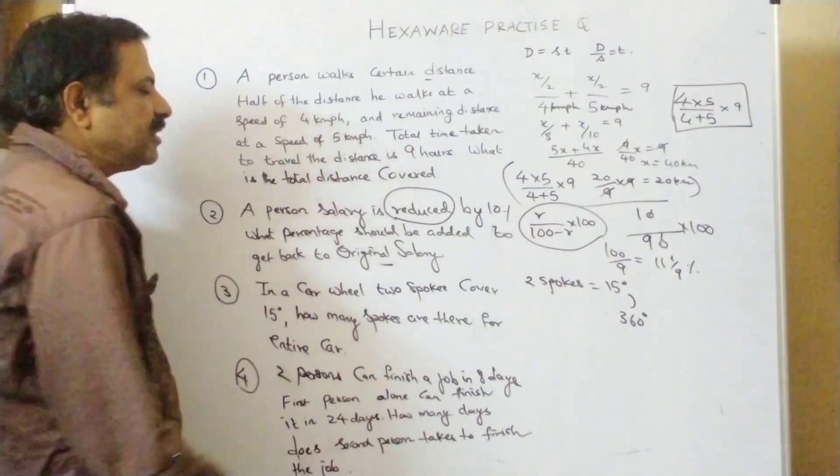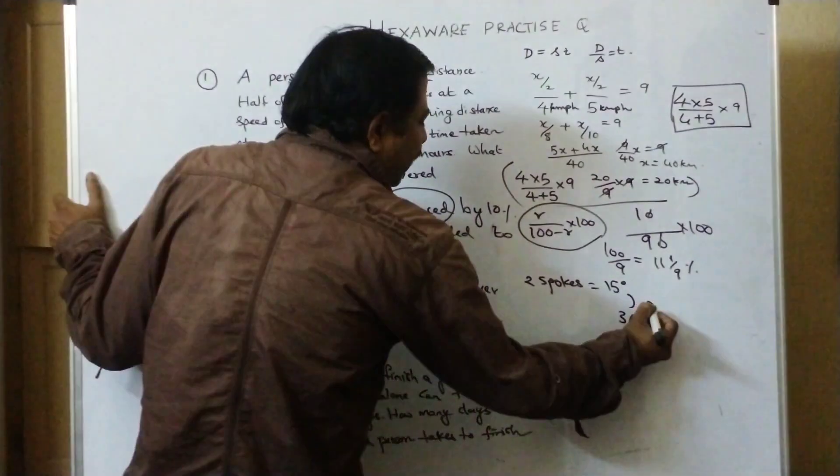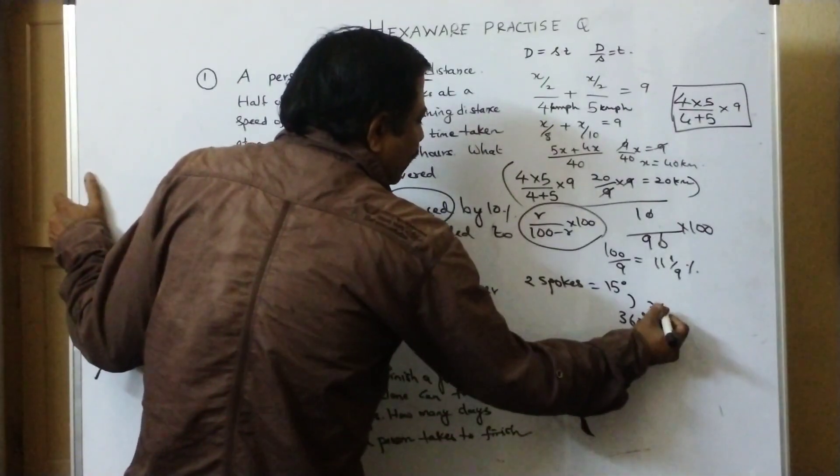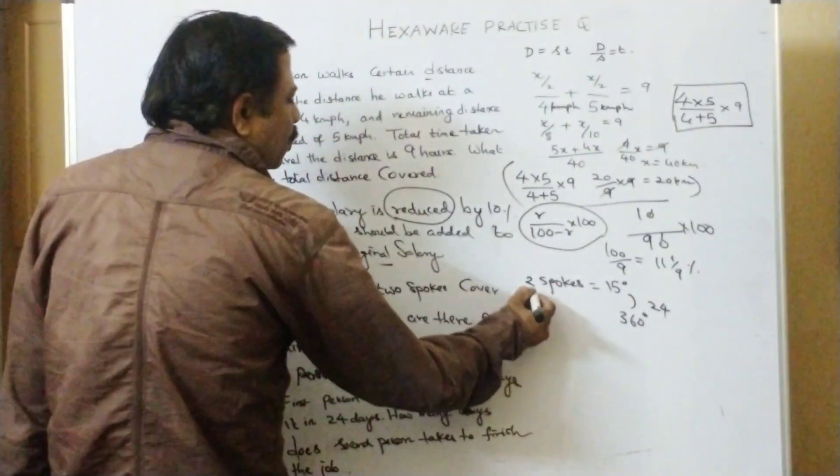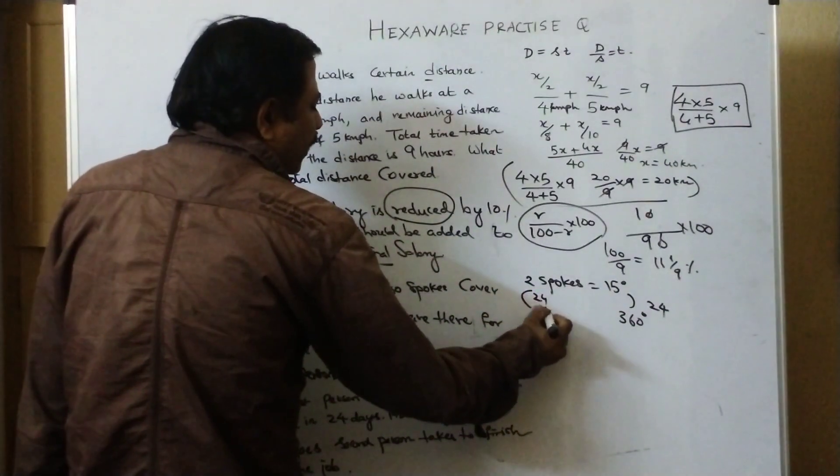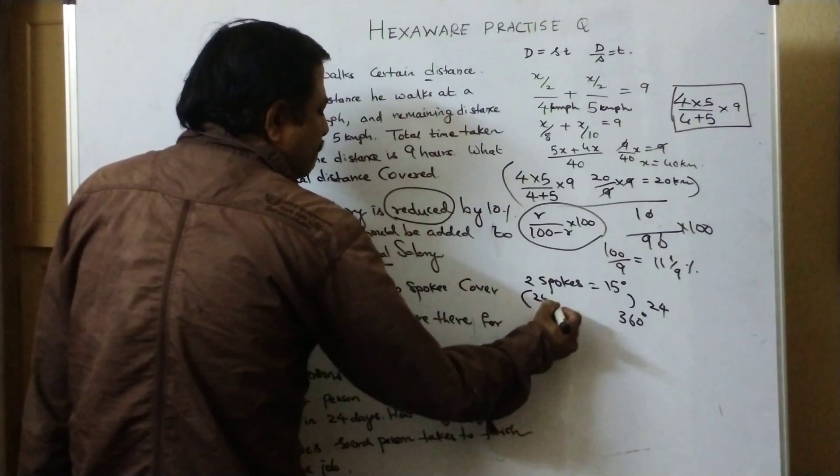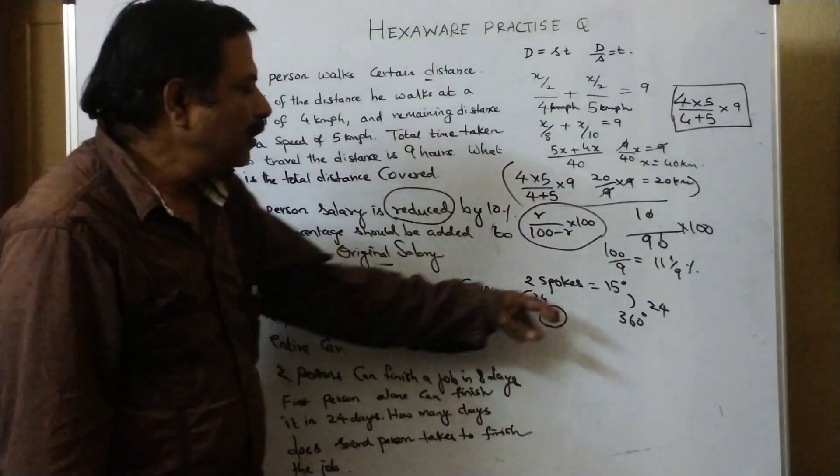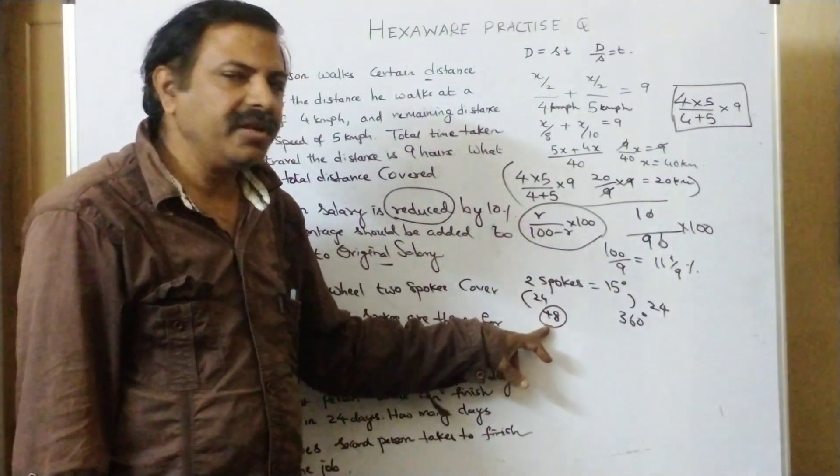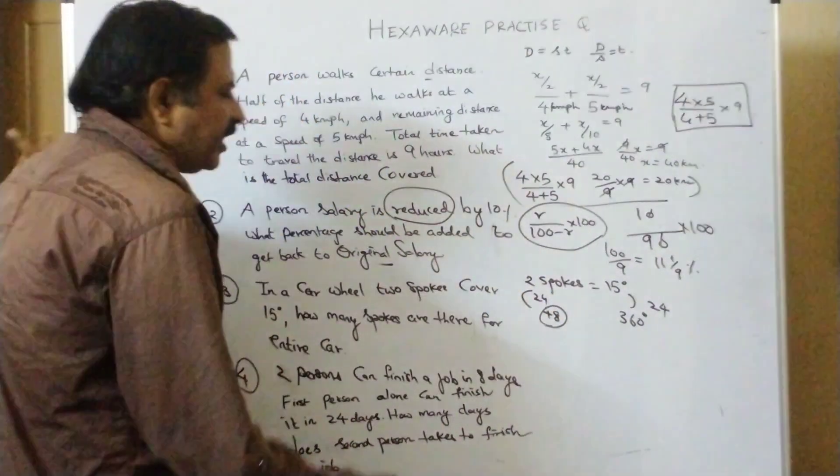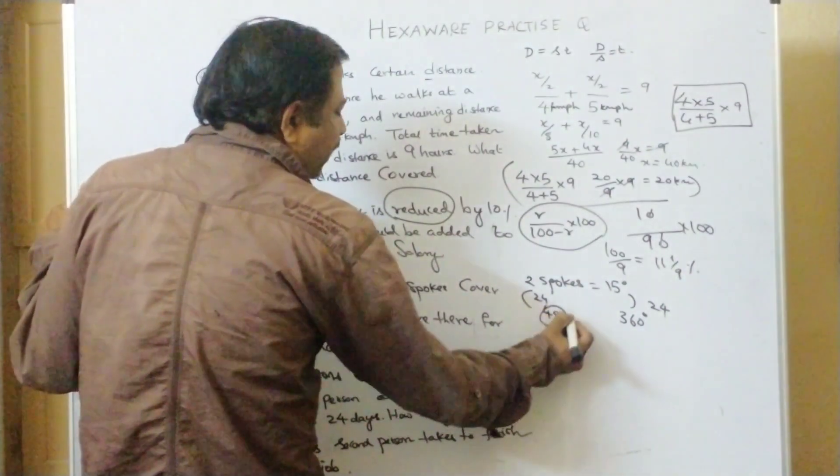Our two spokes 15 degrees. 15 into 24 is 360. So 2 into 24 is 48. So 48 spokes.